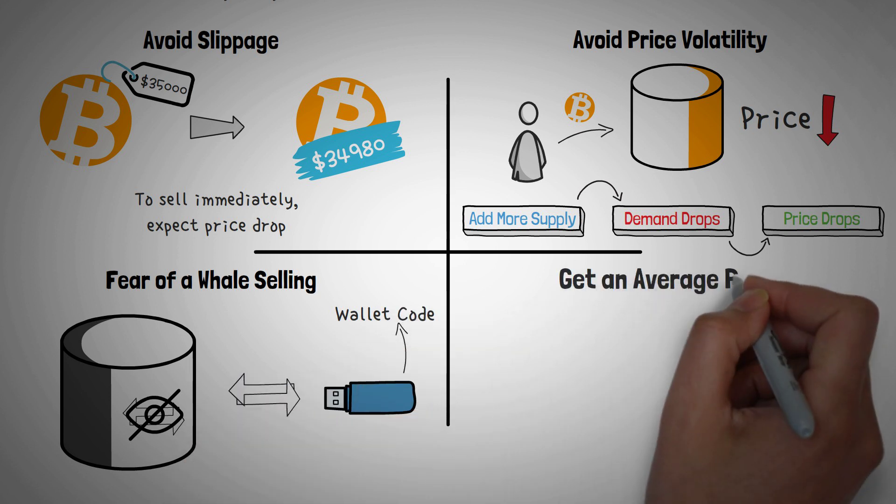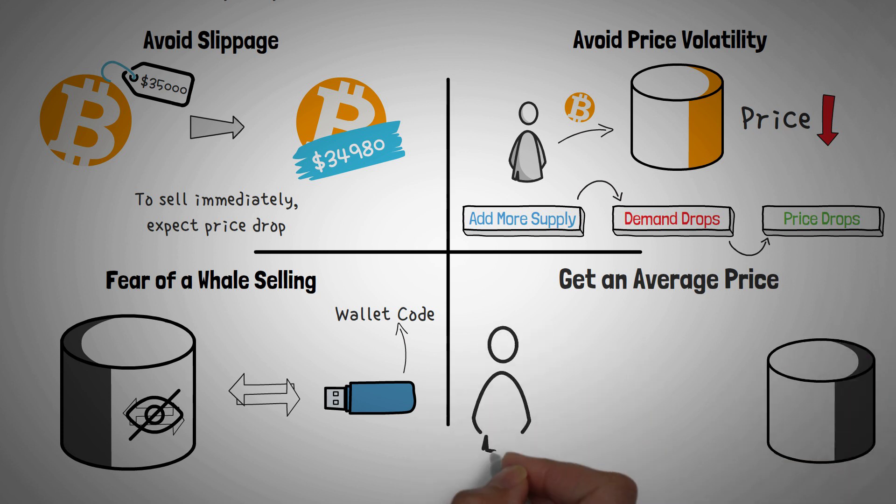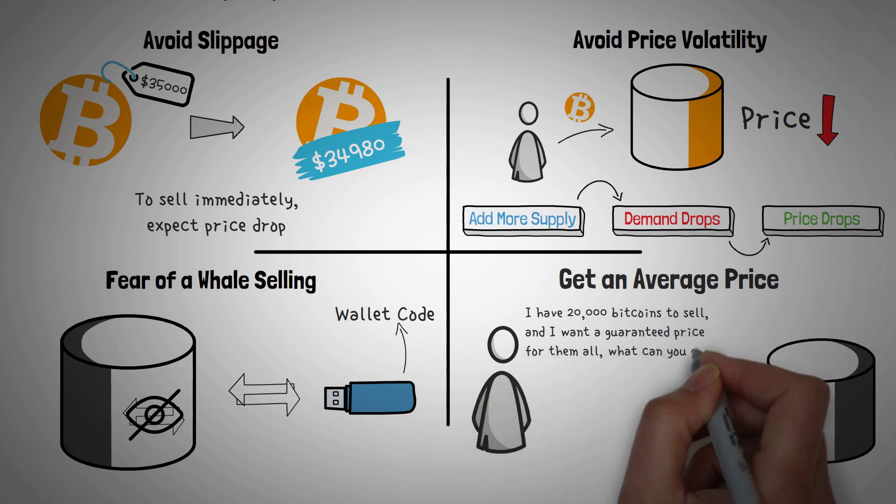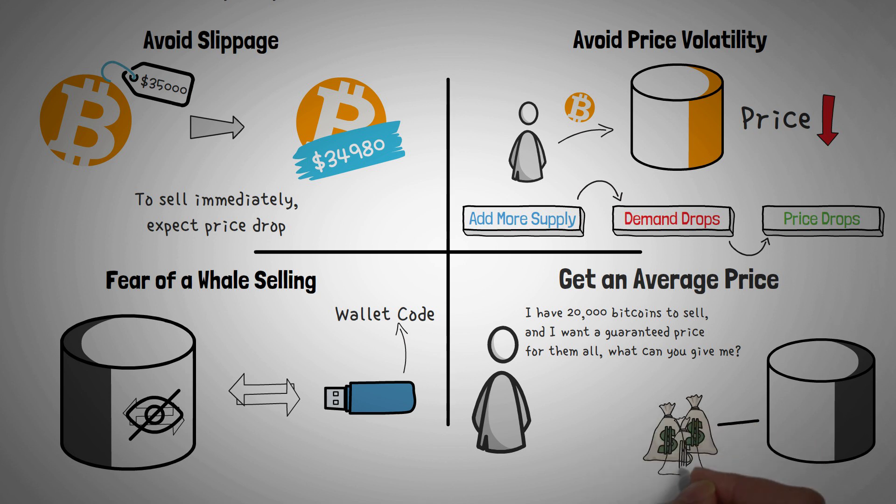Lastly, number four is to get an average price. Some dark pools allow traders to walk in and say, I have 20,000 bitcoins to sell, and I want a guaranteed price for all of them. What can you give me? Then the dark pool will return a price that they can afford, and that will allow the seller to know exactly how much they can actually sell their bitcoins for, instead of guessing how much they may be worth.